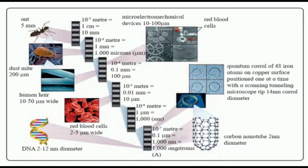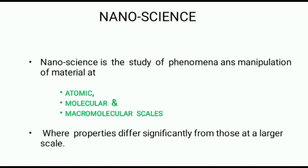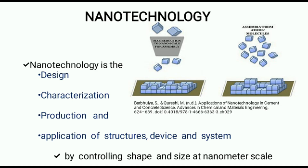It is not a new term — chemists have made polymers for the past 20 years. Nanoscience is the study of phenomena and manipulation of material at atomic, molecular, and macromolecular scale where the properties differ significantly from those at a larger scale. Nanotechnology is the design, characterization, production, and application of structures, devices, and systems by controlling shape and size at the nanoscale.